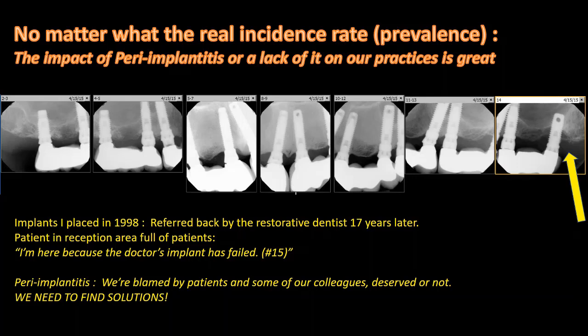This is a case I did about 17 years before I saw it again. I took these x-rays in April 2015. The patient walked into our office in front of a waiting room patient saying that my implant had failed. I took x-rays and noticed the implants were placed by me 17 years prior. Bone levels generally looked great, but implant number 15 had bone loss. Whether deserved or not, we get blamed for these problems, and we need to find solutions.